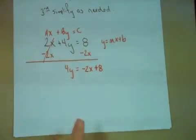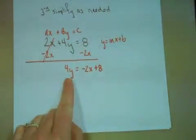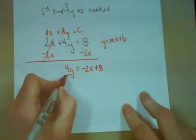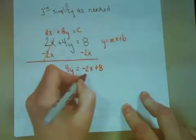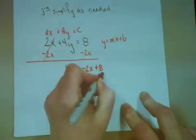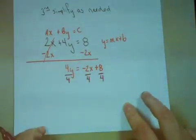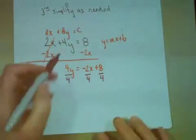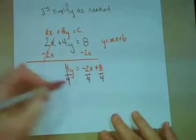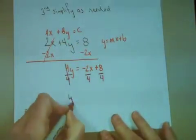Step 2 says now we need to get the y alone by dividing by the b value. So that means I need to take the 4 and I need to divide it here and here and here. My third step says simplify everything. Well, the 4's cancel out and my y is alone.